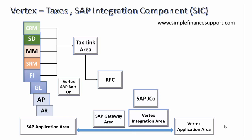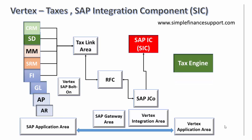A SAP Java component receives calls from the RFC module, and that SAP Java component passes the information to the SAP Integration Component (SIC). This integration component is a critical piece of the product that enables seamless integration with the tax area. The SAP Java component is linked to the SAP Integration Component, and from there the tax engine is called.